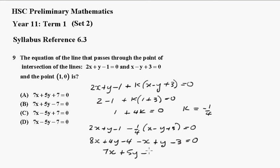And of course that is this one here which is b. 7x plus 5y minus 7 equals 0.